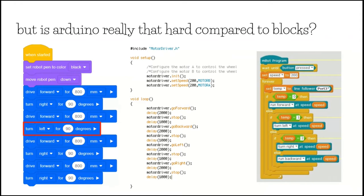But is Arduino really that hard compared to blocks? Here on the left, we've got some instructions that draw a square, and in the middle, we've got instructions that draw a square using Arduino. Now it's a little bit more complex — there are a lot more symbols — but conceptually it's fairly similar. The jump from those two things isn't that difficult.